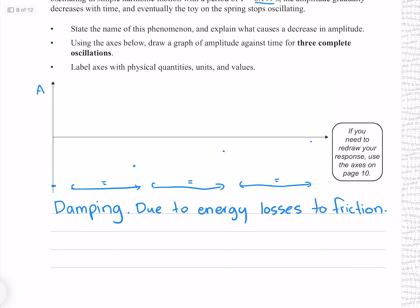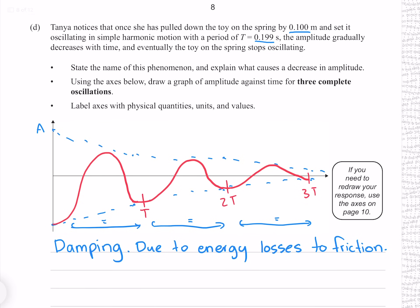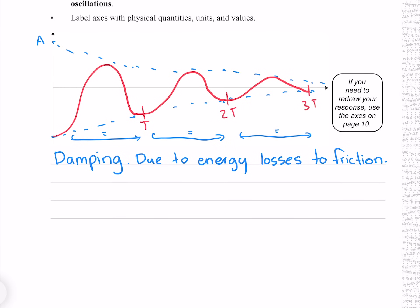To help draw this, mirror the graph on the other side and sketch an envelope. Mark one period, two periods, and three periods, indicating the initial amplitude of 0.1 m. The graph is a cosine shape showing decreased amplitude over three cycles with constant time periods. For excellence: write damping, show energy losses due to friction, correct cosine shape with decreasing amplitude over three cycles, constant time periods, and correct labels and values on axes for amplitude and period.